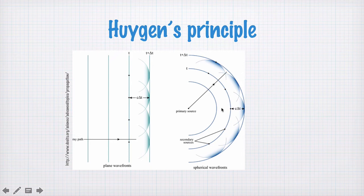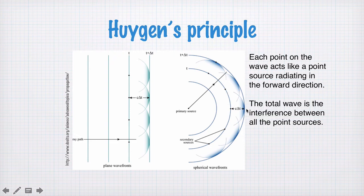Anyhow, in a circular wave or a spherical wave, you can imagine all your point sources lying on a circle here. And when all these point sources interfere from this circular wave front, they add up and give you a larger circle. This is called Huygens Principle. And the point is that each point on the wave acts like a point source radiating in the forward direction. And the total wave is the interference between all the point sources.